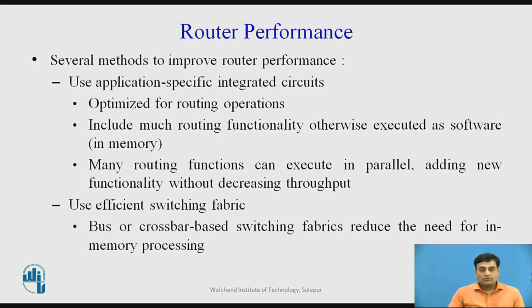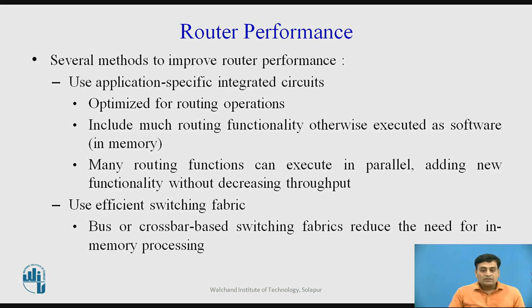There are several methods to improve router performance. The first is to use Application Specific Integrated Circuits (ASICs), which are specially designed circuits optimized for routing operations. ASICs include much routing functionality that would otherwise be executed as software, and many routing functions can execute in parallel, allowing new functionality to be added without decreasing throughput. The second method is to use an efficient switching fabric. Bus or crossbar-based switching fabrics reduce the need for in-memory processing and can improve performance.